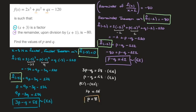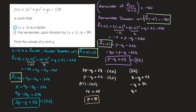That's one coefficient found. To find the other, we use equation e2 and replace p by 8. So e2 becomes 8 minus q equals 42, which gives negative q equals 34, and therefore q equals negative 34. We now have both unknown coefficients: p equals 8 and q equals negative 34.